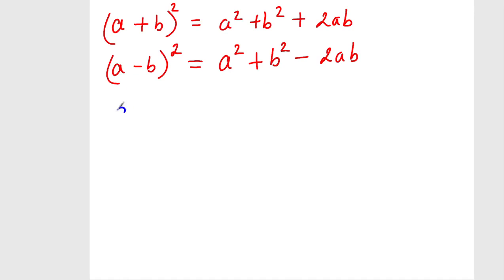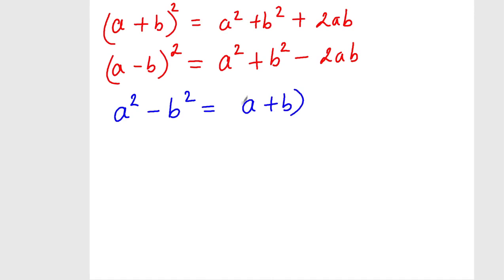Now we learn today the third identity: a squared minus b squared. So, a squared minus b squared is equal to a plus b and a minus b.